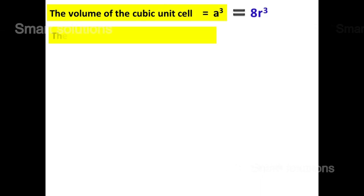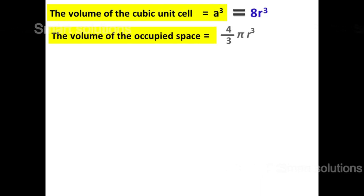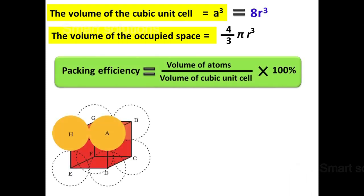Let's substitute these values in the packing efficiency formula. Here, the volume of the occupied space is equal to 4 by 3 pi r cubed, and the volume of the cubic unit cell is equal to 8r cubed. So r cubed and r cubed get cancelled, and 4 into 8 is 8.